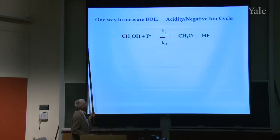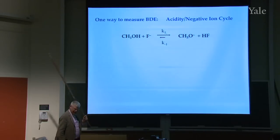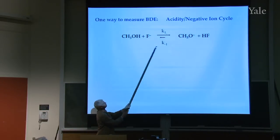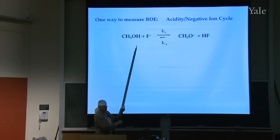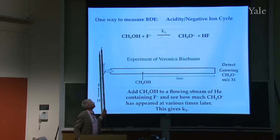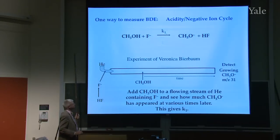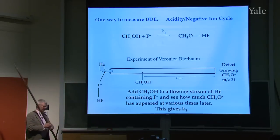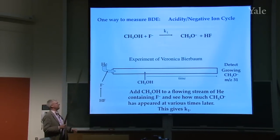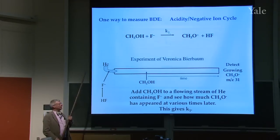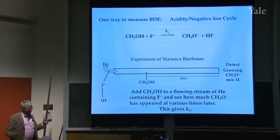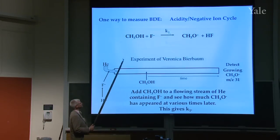So if you could do that, what you'd like to think about is how you could measure an equilibrium between these two species. If you have the equilibrium, you can get the enthalpy, and if you can get the enthalpy, you can get the acidity. This is an experiment done in Boulder. The world's expert in these gas phase acidity measurements is my colleague Ronnie Bierbaum — Professor Doctor Veronica Marie Bierbaum — and she's very good at this.